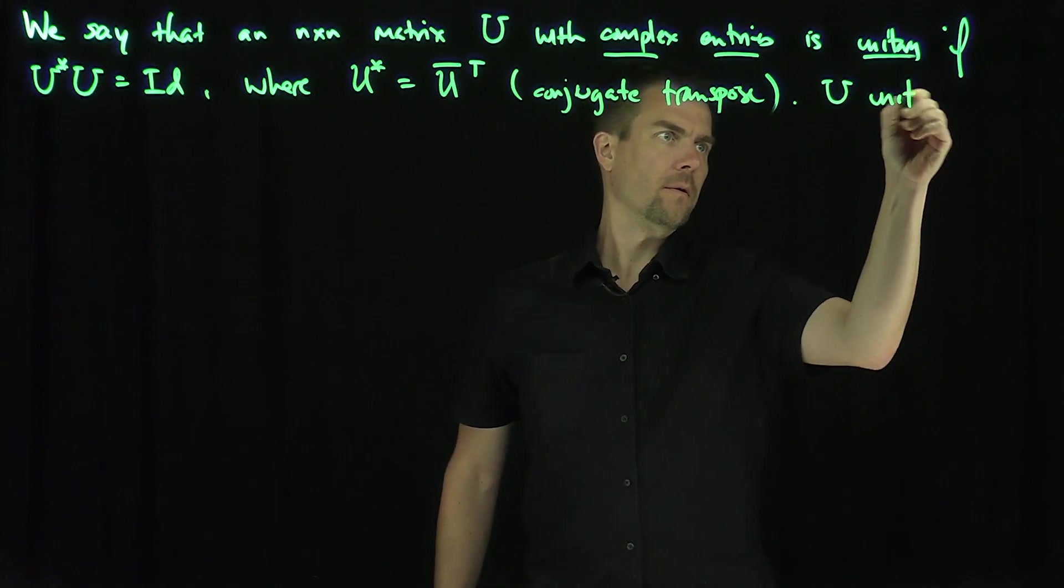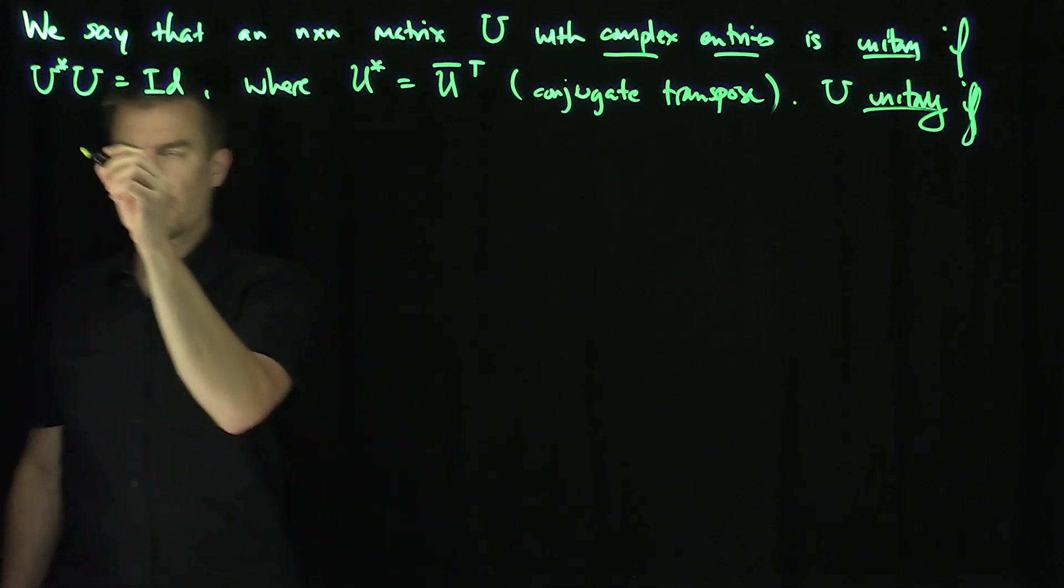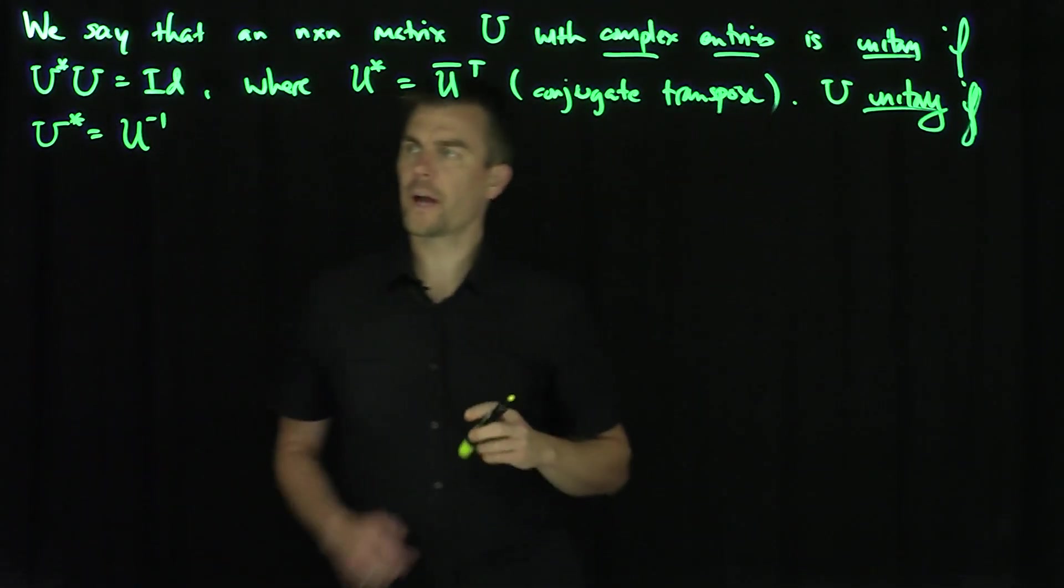U is unitary if and only if U star is equal to U inverse.